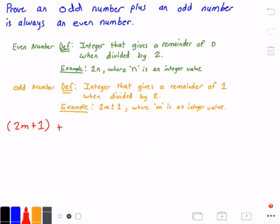It may be the same, it might be different, so instead of using the m variable as an integer value, we're going to use k. So now we're going to get 2 times k plus 1, where k is some arbitrary integer value.